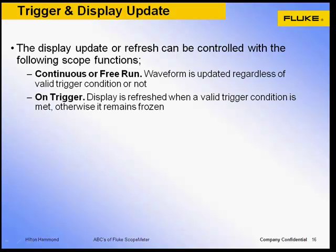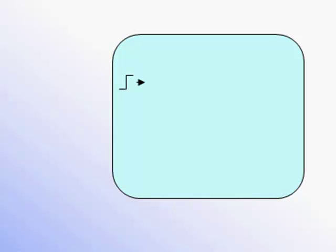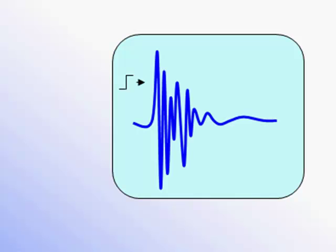The trace display update can be controlled. The typical choices are continuous or free run, which updates the display regardless of the trigger condition. A live trace can be seen even with no input signal. This is the scope meter's default condition. On trigger refreshes only when a valid trigger condition occurs. Otherwise the trace will freeze, waiting for a valid trigger to occur before updating or refreshing the display. This mode typically provides the fastest display refresh or update rate.